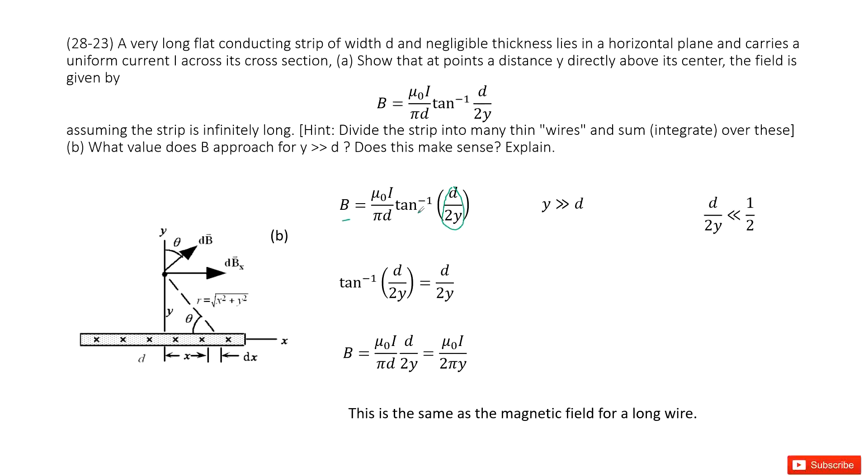And for the arc tangent, a small number for arc tangent is just equal to itself. You can use the Taylor expansion to prove it. But I think everybody can work it out by themselves. And then you can see this term can be simplified as d/(2y). Now you include d/(2y) inside. You get it.